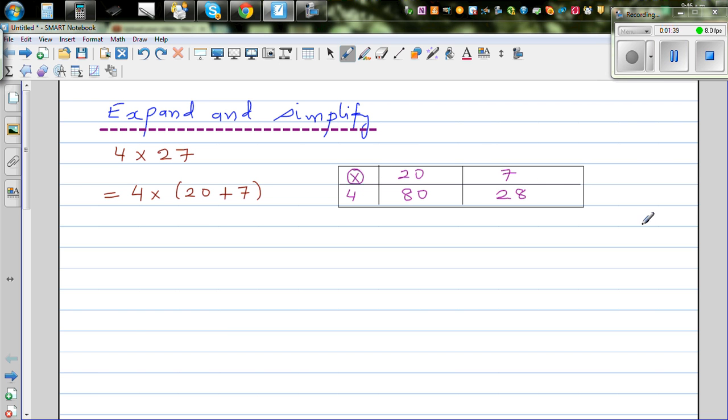You should know the times table from 1 to 9 at least. And you have to add them, so the final answer would be 80 plus 28, which is 108. So let me take one more example.